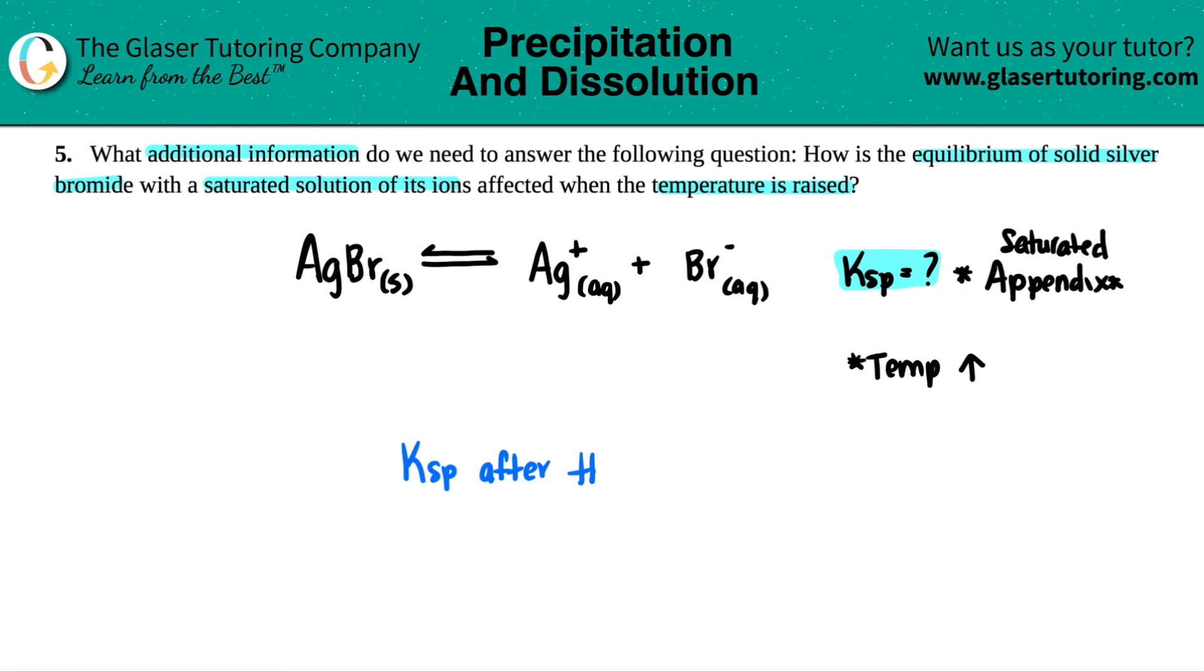The KSP after the temp increase needs to be known because only then will we know how much that equilibrium be affected. So you need to know two KSP values, the one before and the one after. The one before we should know because that's a textbook value. They did say saturated, but the one after they didn't tell us what the KSP is. And that's the only way that we would figure out how to find out the equilibrium.